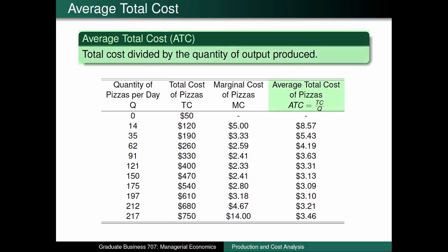Average total cost is calculated as the total cost divided by the quantity. The initial value of average total cost is a dash because we cannot calculate average total cost when there are no pizzas produced, since any number divided by zero is undefined. Notice that the same relationship between marginal product and average product applies to the relationship between marginal cost and average total cost. That is, when the new value of marginal cost is greater than the previous value of average total cost, the new value of average total cost increases. However, when the new value of marginal cost is less than the previous value of average total cost, the new value of average total cost decreases.